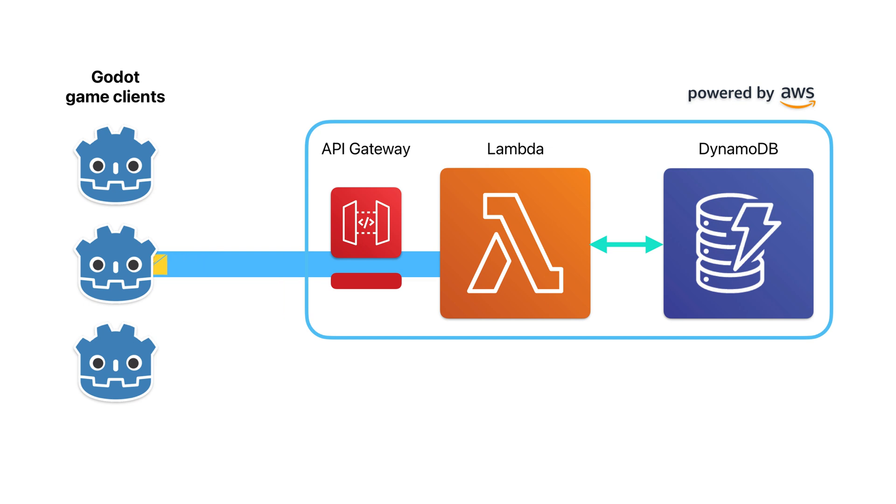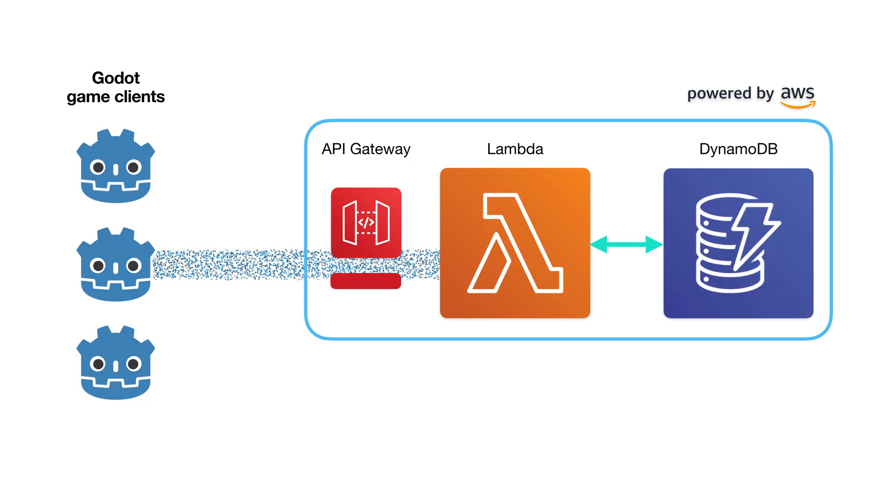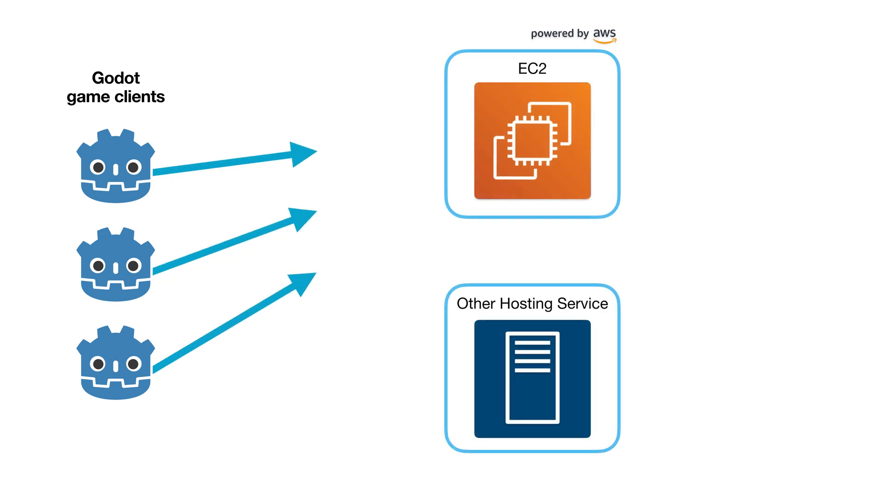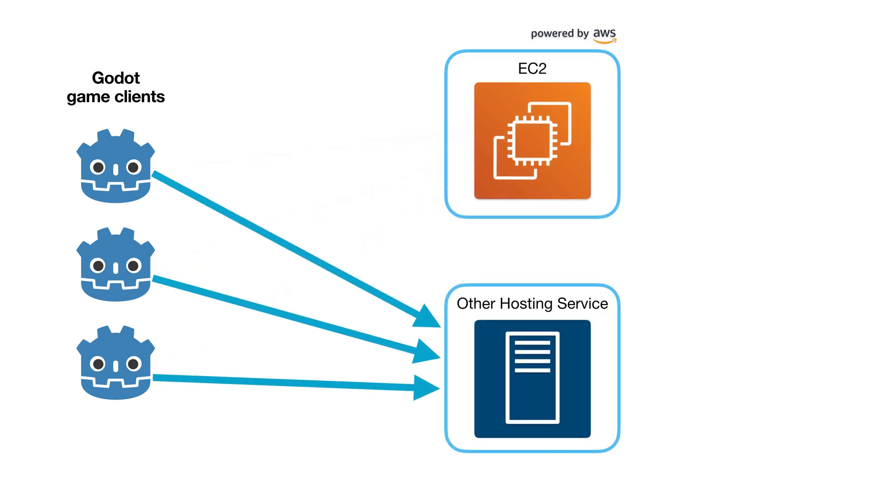That start-game message contains the connection info for the Godot server hosted wherever you have it, so the clients can connect to it. The Godot server can literally be hosted anywhere — you can use this Lambda, API Gateway, and DynamoDB setup for matchmaking and lobby without having to use AWS to host your game server. As long as you configure the Lambda function with the correct IP or port, it'll work fine. Once the match is full, the start-game message is sent, and I call the connect-to-server functionality, which kills the WebSocket and connects directly to the Godot server's IP and port so gameplay can begin.